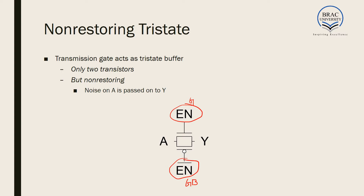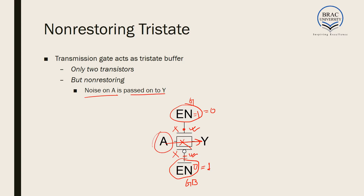In the non-restoring tri-state we consider an enable pin and its complement EN bar. If EN is equal to one, EN bar automatically becomes zero. EN equal to one turns the NMOS on; EN bar equal to zero turns the PMOS on. When both are on, A will be mapped to Y. If EN is equal to zero, EN bar will automatically be one — the NMOS turns off and the PMOS turns off as well. As a result, no signal can flow from A to Y. The problem is that it is non-restoring: noise from A will be passed to Y. If signal A is noisy, output Y will be noisy, because whatever is at the input when the tri-state buffer is on will be mapped to the output.